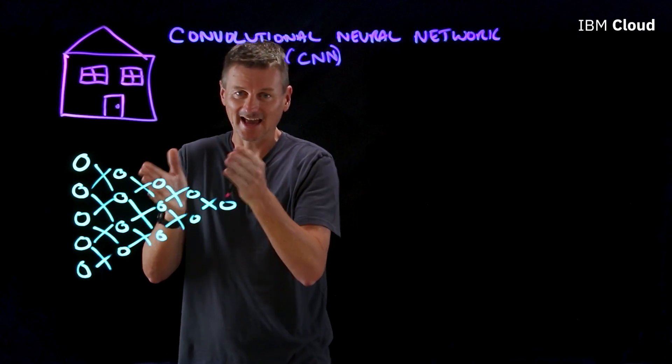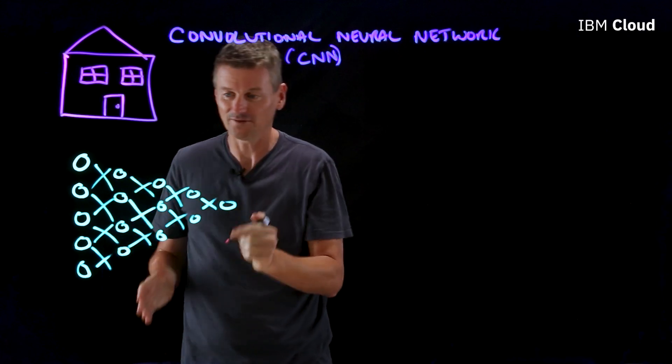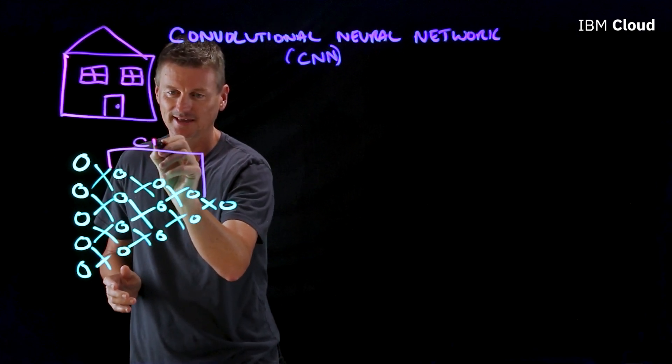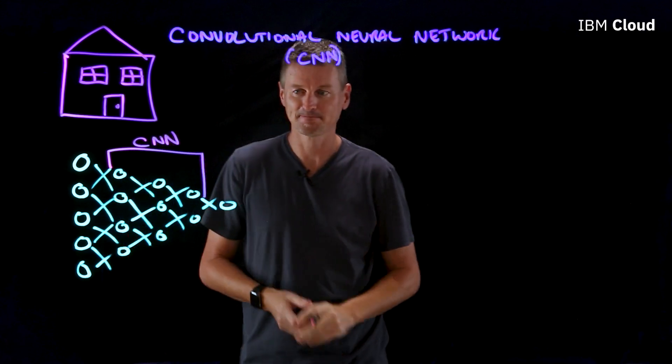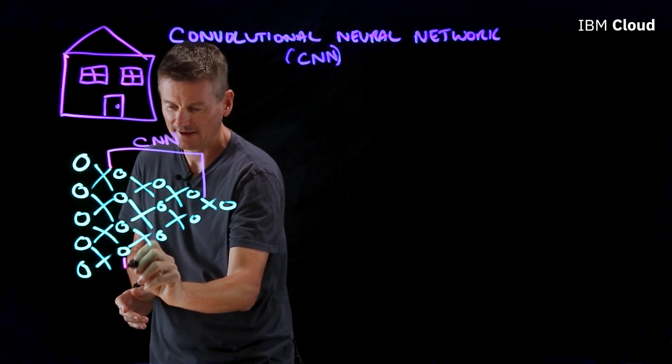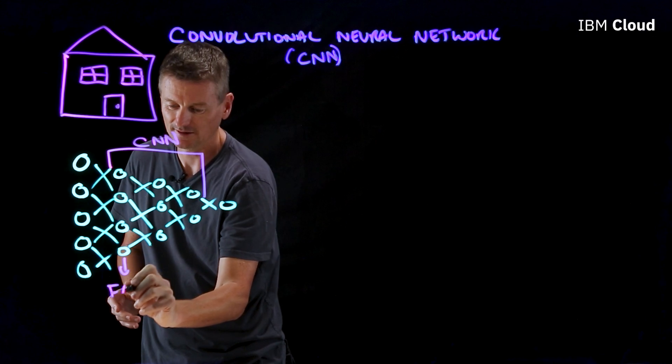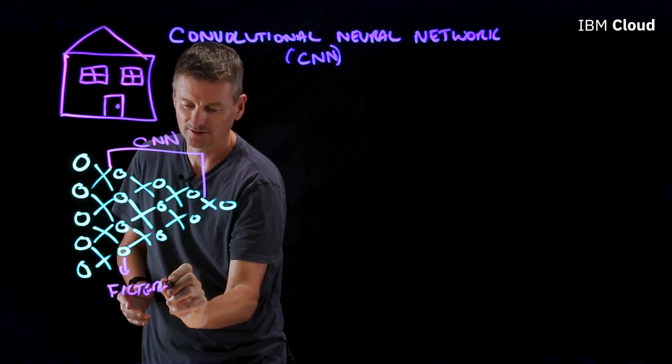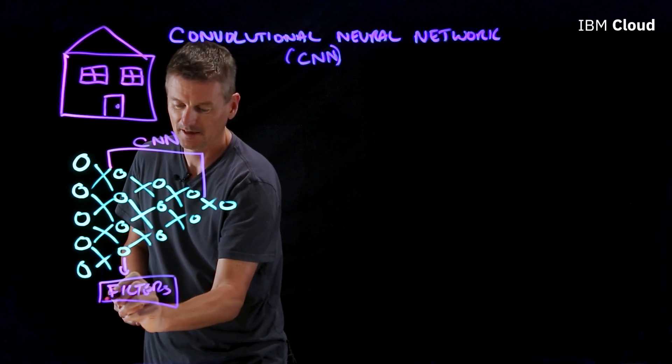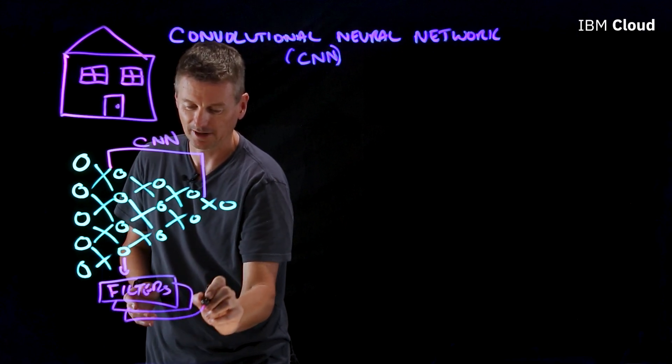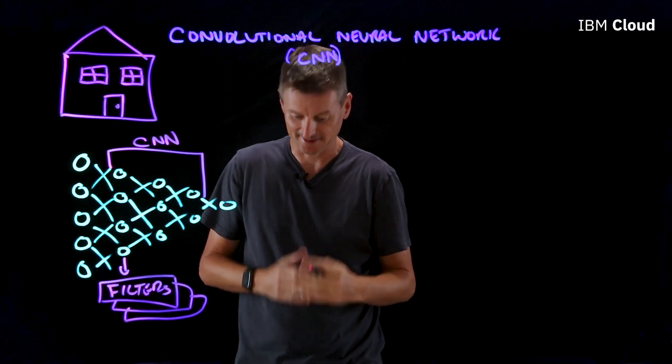And CNN is a particular part of the neural network or a section of layers. Let's say it's these three layers here. And within these layers, we have something called filters. And it's the filters that perform the pattern recognition that CNN is so good at.